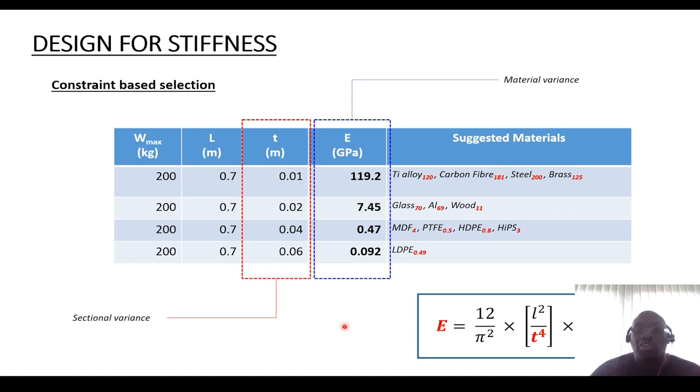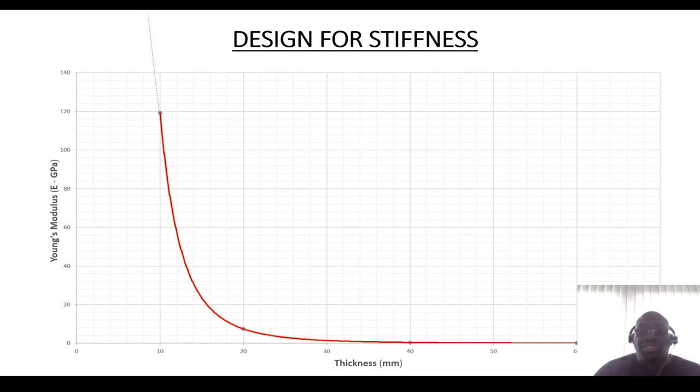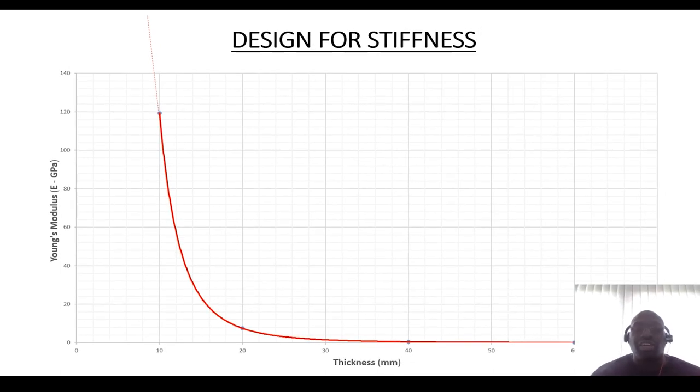So hopefully the majority of you have had a go looking at the constraint-based selection model. As shown last week, you can use your information to plot a characteristic curve. Because in the example that we're looking at, we're looking at the table. So if we increase the thickness of the table, what are the materials that will be ideal, dependent on what the thickness is?